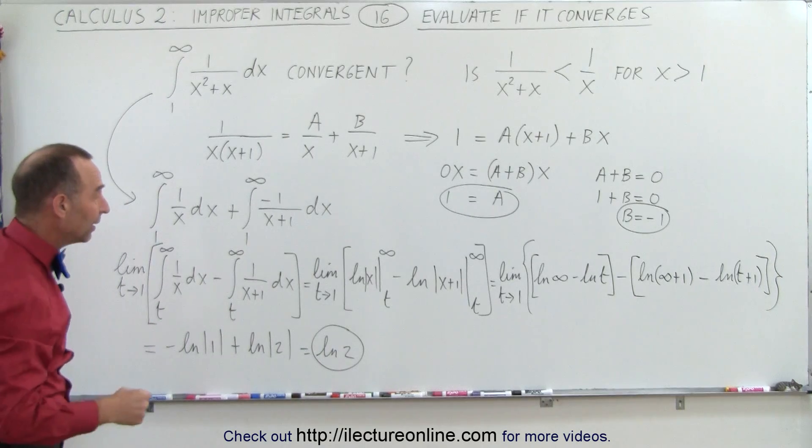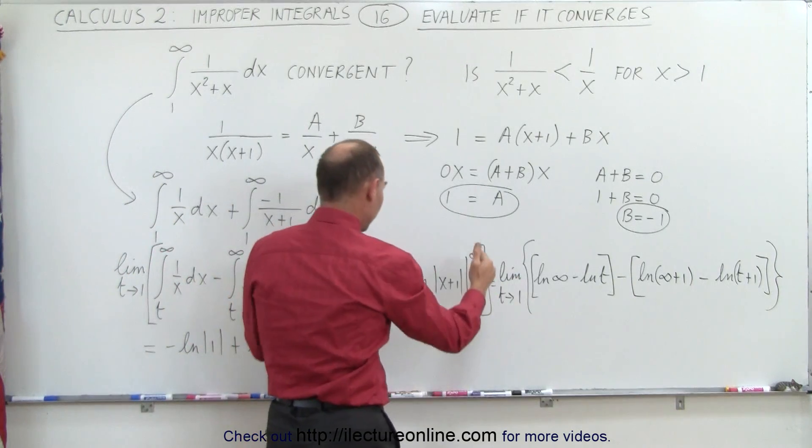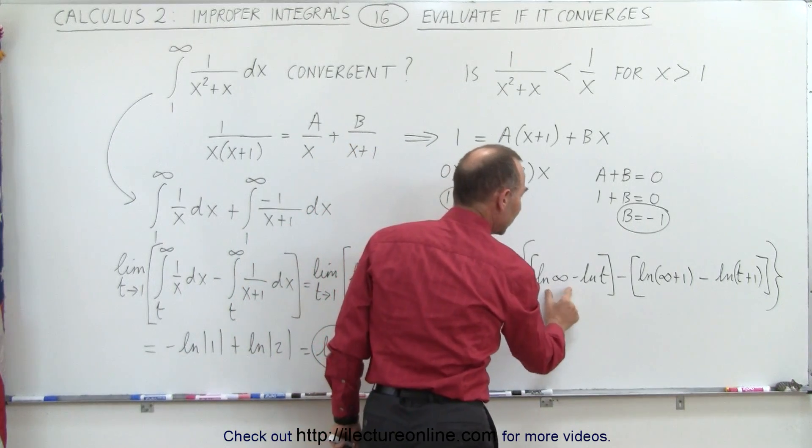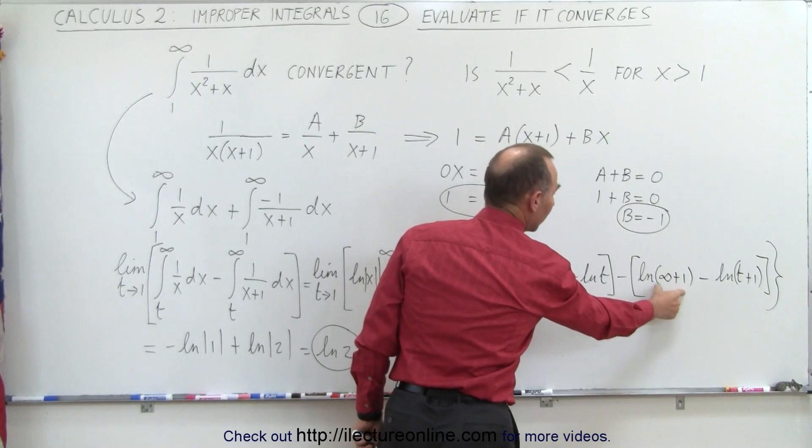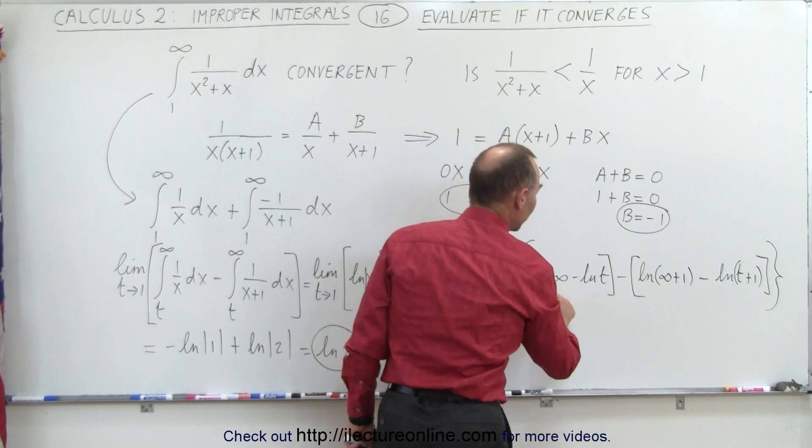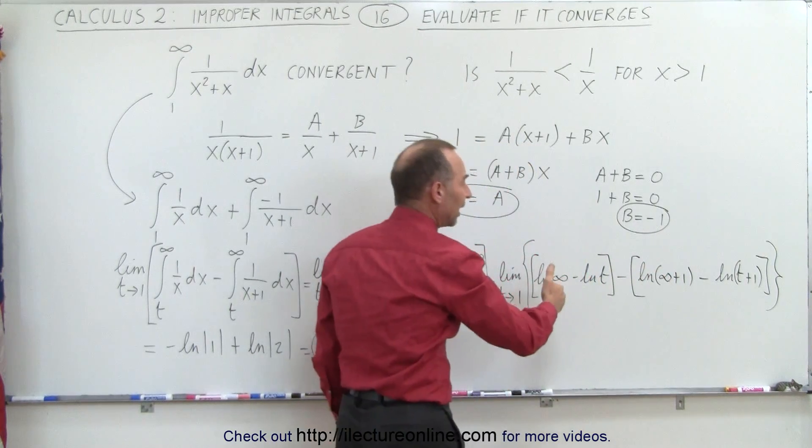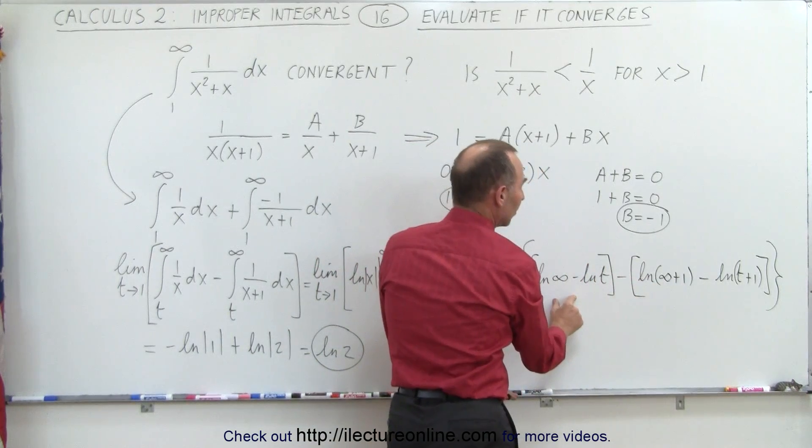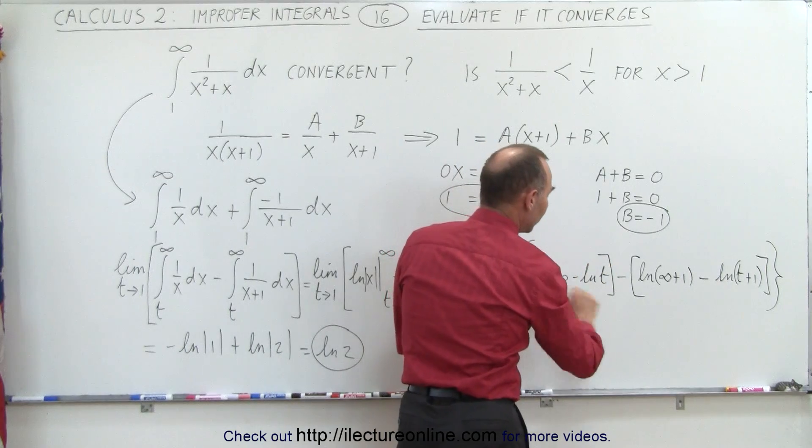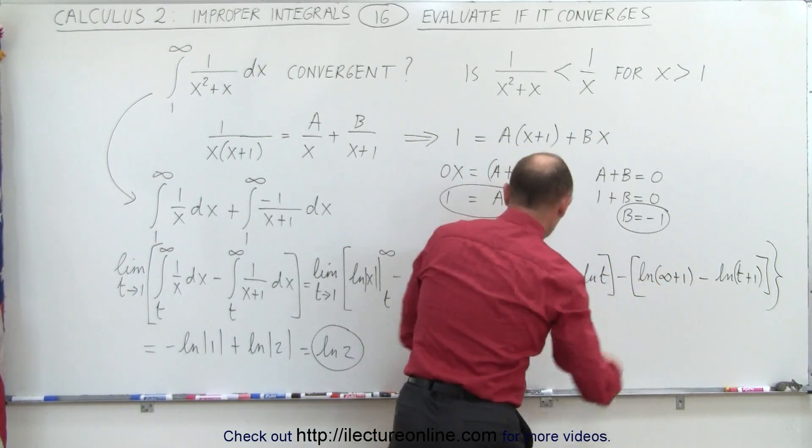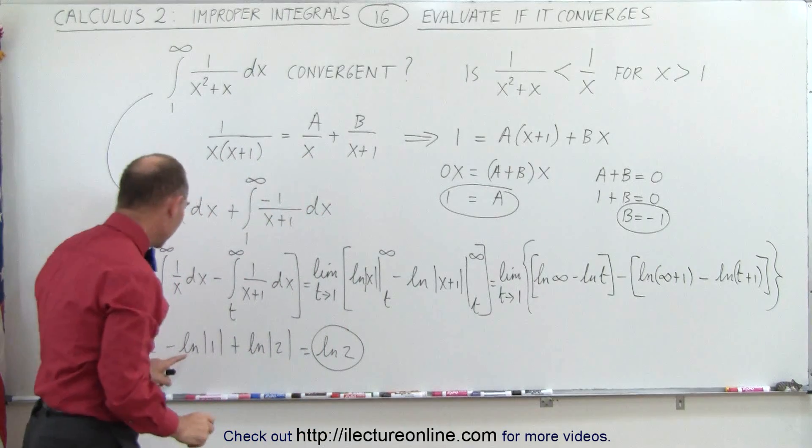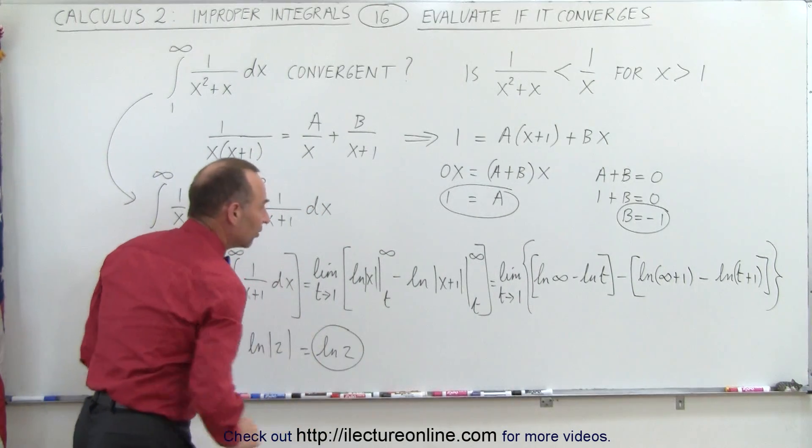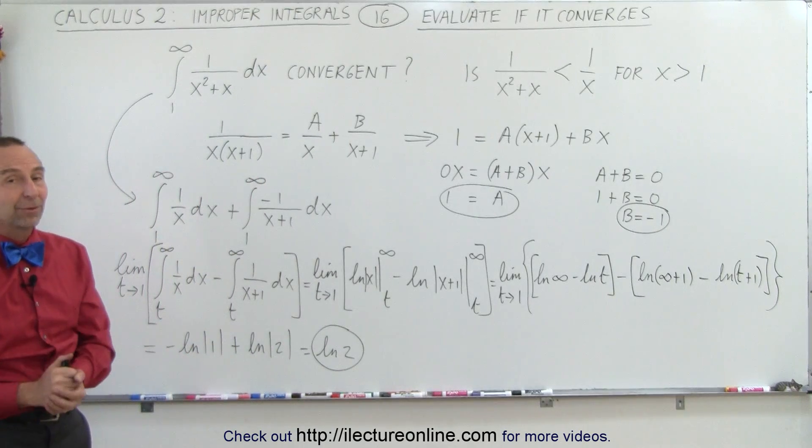When we continue with that and we evaluate the function after the integral, after we put the limits in, we notice we have the natural log of infinity minus the natural log of infinity plus 1. This will negate this because for every value of x as you reach infinity, this will always be larger than this by a very tiny amount. And so therefore, when we eliminate that, what we have left is simply minus the natural log of 1 plus the natural log of 2, and the result is the natural log of 2. And that's how it's done.